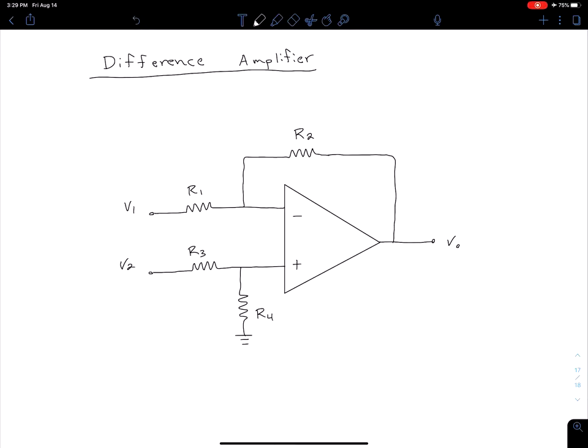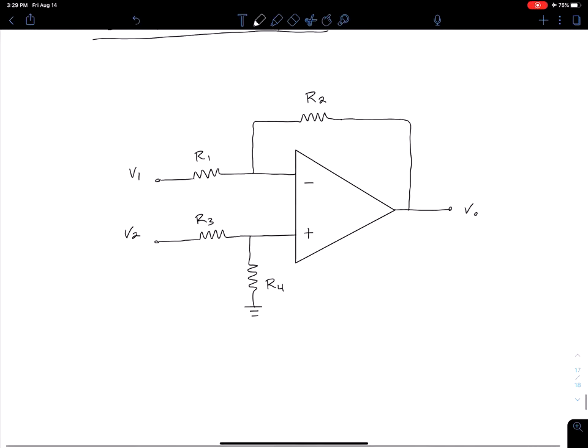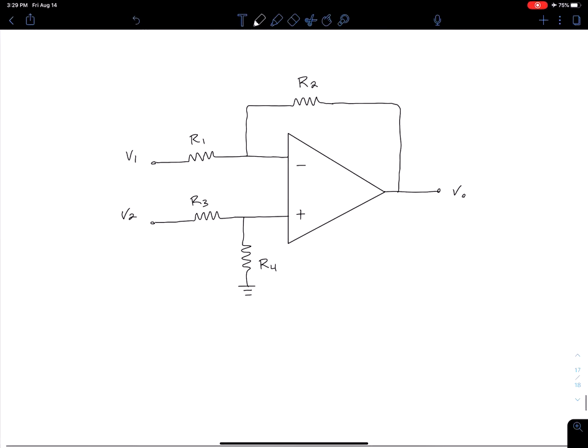Before we get into analysis, let's talk about what this amplifier is meant to do. As the name implies, what this is going to do is amplify the difference between the two inputs, but it's also going to be blocking or rejecting any signals that are common to the two inputs.